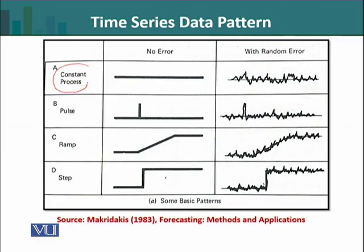The basic process is actually a constant process. If we consider a constant process in a deterministic process, then we will have a straight horizontal line. But with the presence of random error, we will observe some fluctuations around this horizontal line. So if we have a constant level in a deterministic time series, we have a straight horizontal line. If the phenomenon is stochastic, then there will be noise and random error present.